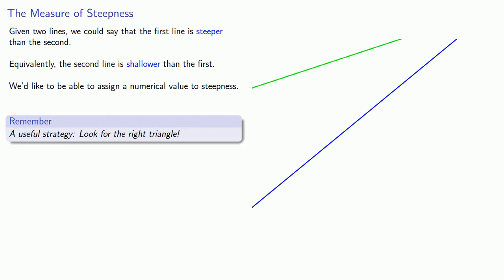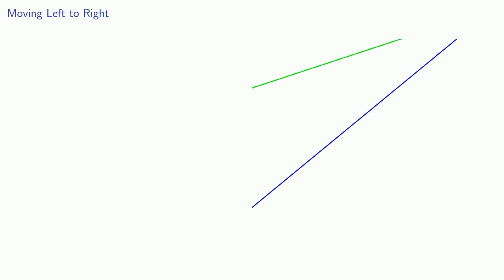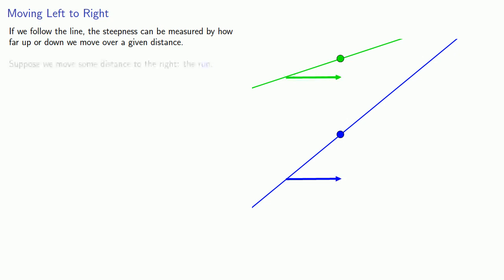Look for the right triangle. We might approach the problem as follows. If we follow the line, the steepness can be measured by how far up or down we move over a given distance. Suppose we move some distance to the right - we'll call that the run. Then we might move up or down some distance - we'll call that the rise. This suggests that what we think of as the steepness of the line, or slope, is the ratio of rise over run.